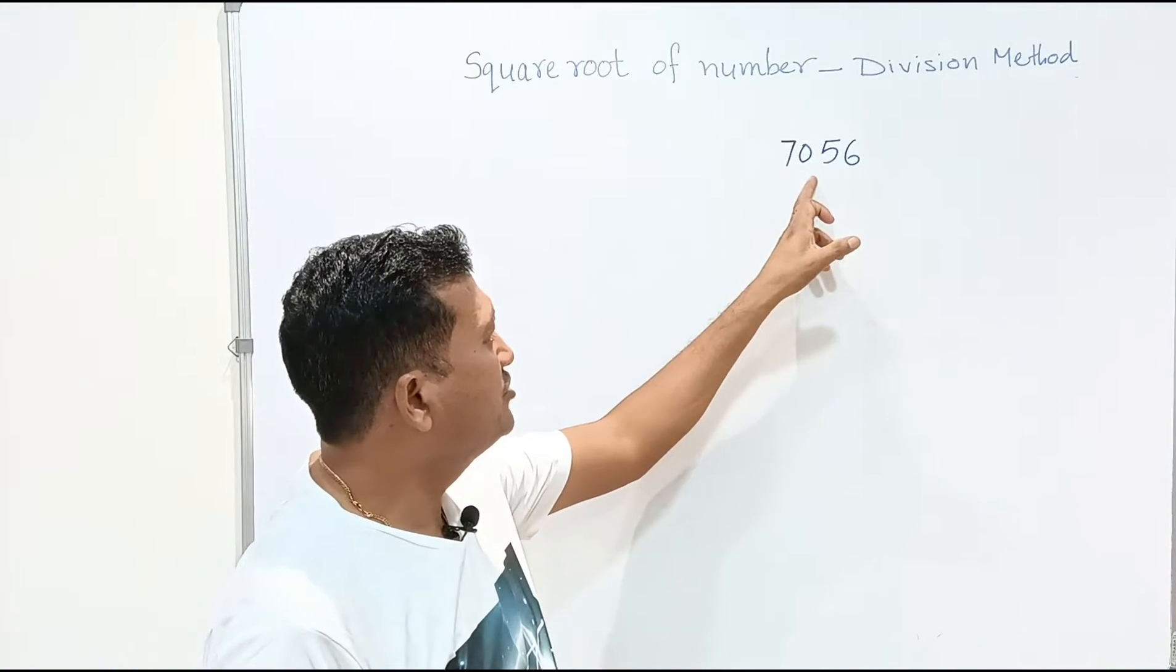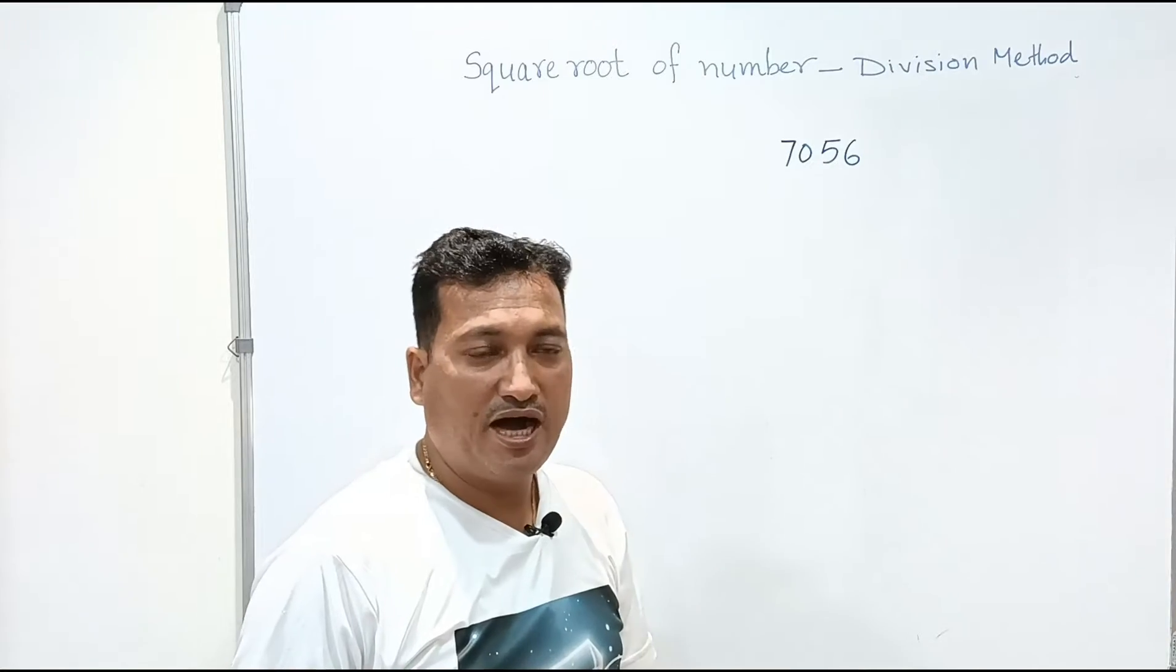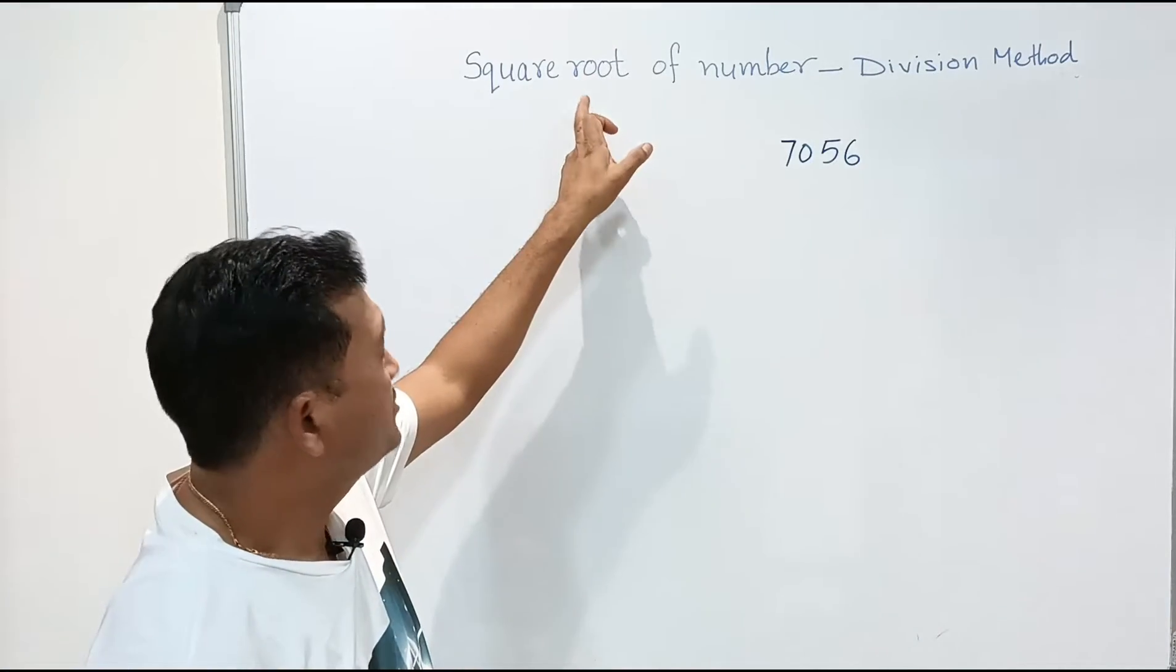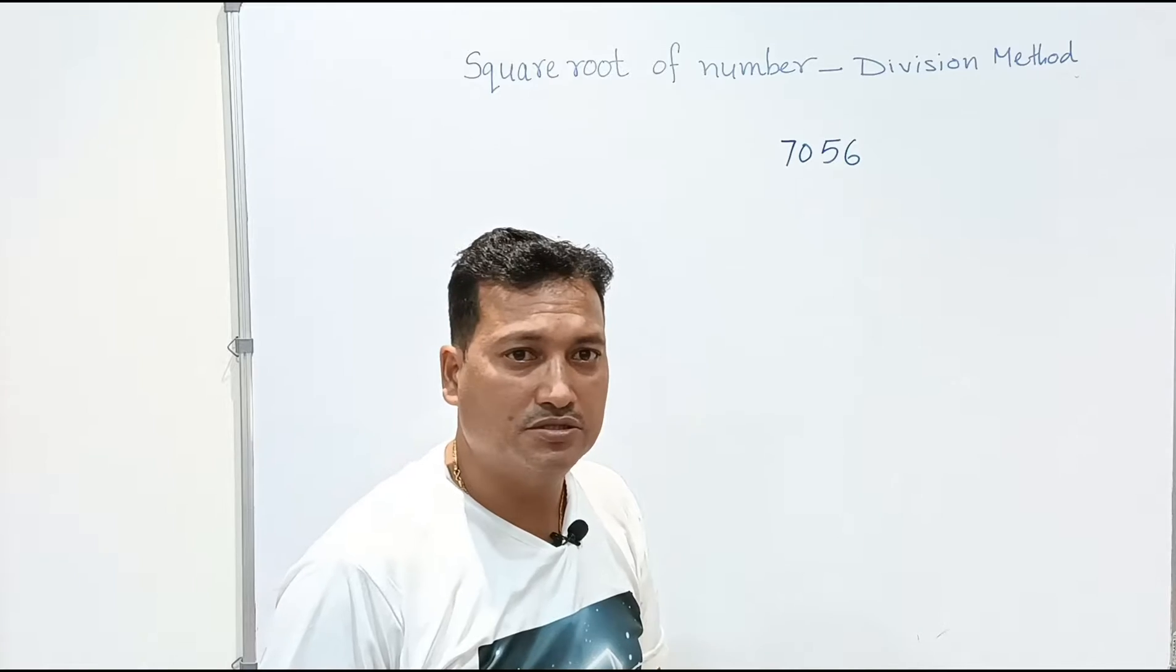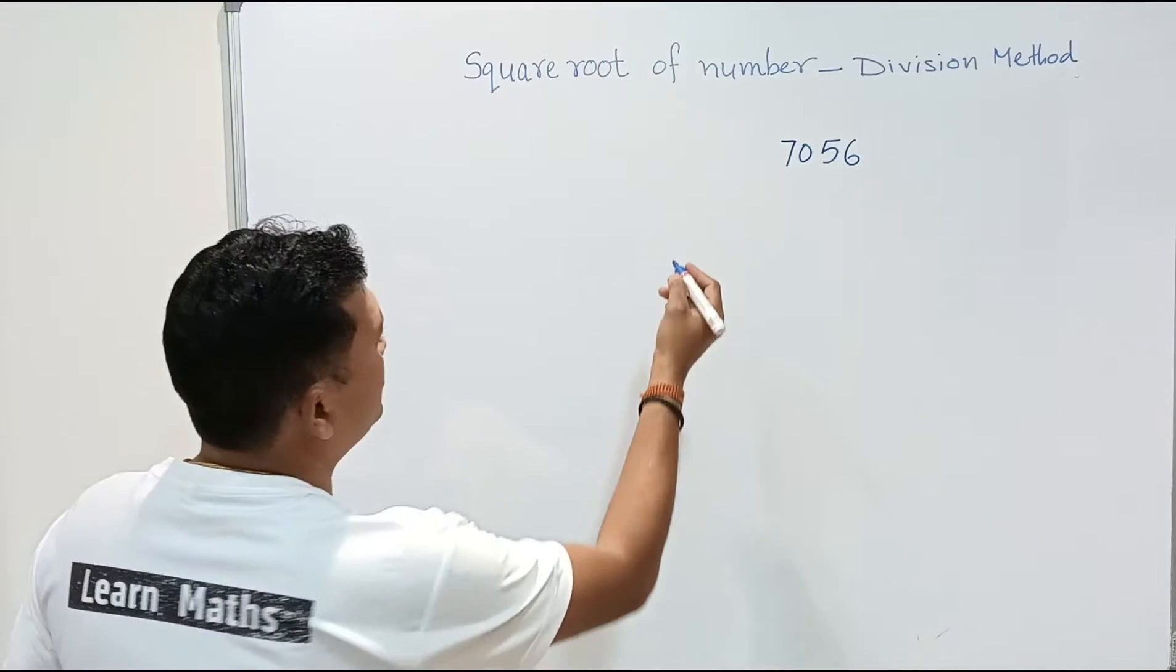Here we have a number 7056. I have to get its square root by division method. So first we need to write this number.